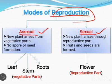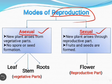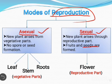In asexual reproduction, plants are produced without using the seed. In this process, generally the vegetative parts — that is, the leaves, stem, and roots — are involved. But in sexual reproduction, the new plants are produced with the help of seeds of a plant. In this process, the reproductive parts, that is, the flower of the plants, participate in reproduction.